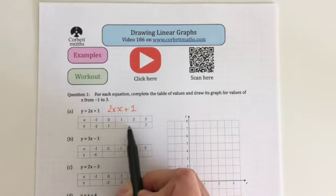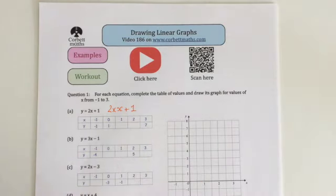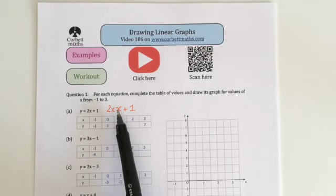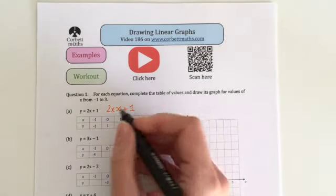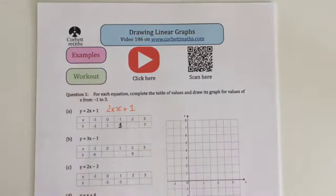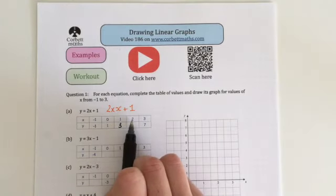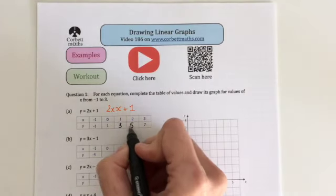So you can fill in the other two blanks. For this one, we do 2 times 1, which is 2, plus 1, which is 3. And then the last one, 2 times 2, which is 4, plus 1 is 5.